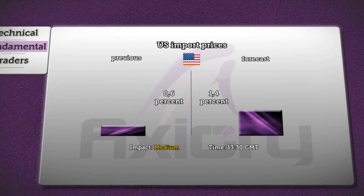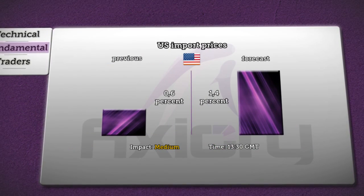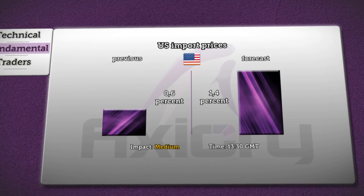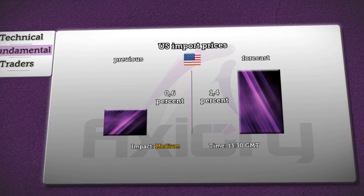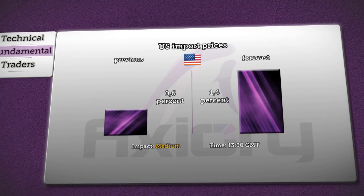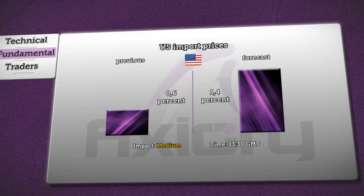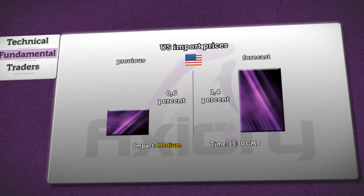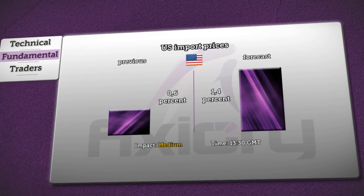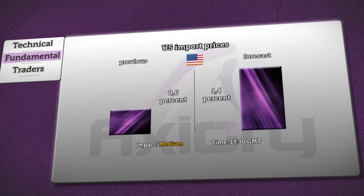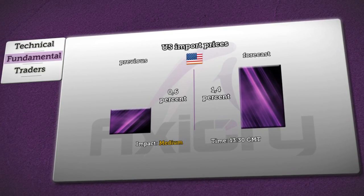Last news for today concerns import prices in the U.S. It will be published at 1:30 p.m. GMT by the Bureau of Labor Statistics, which is expecting an increase of 1.4%, compared to the previous decline of 0.6%. A medium impact on the euro can be awaited.